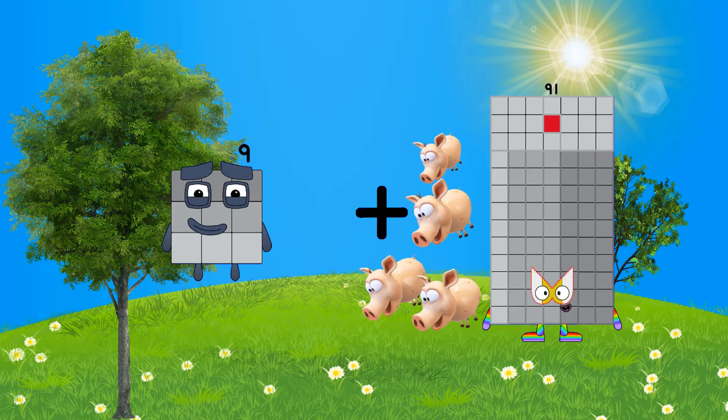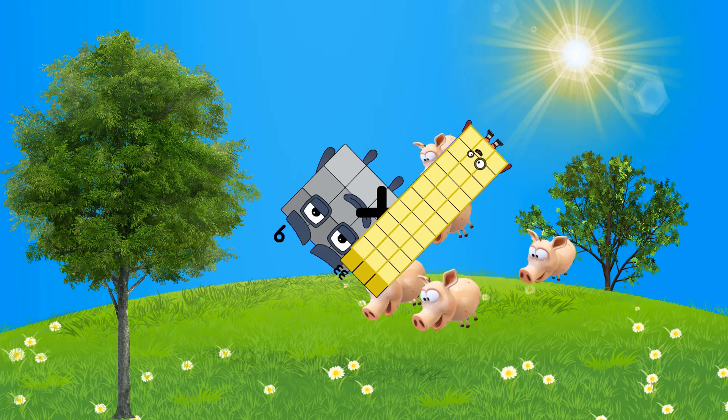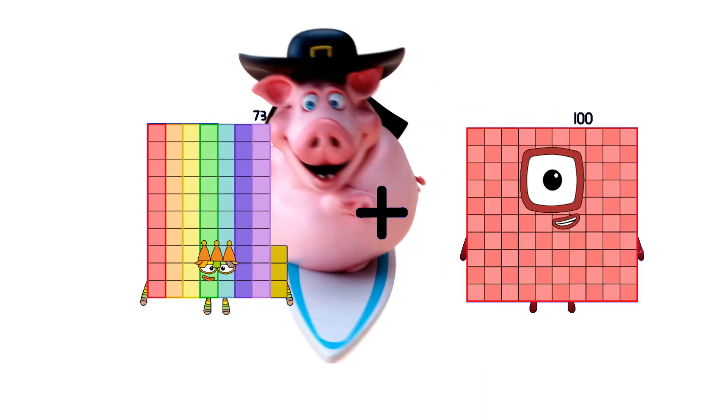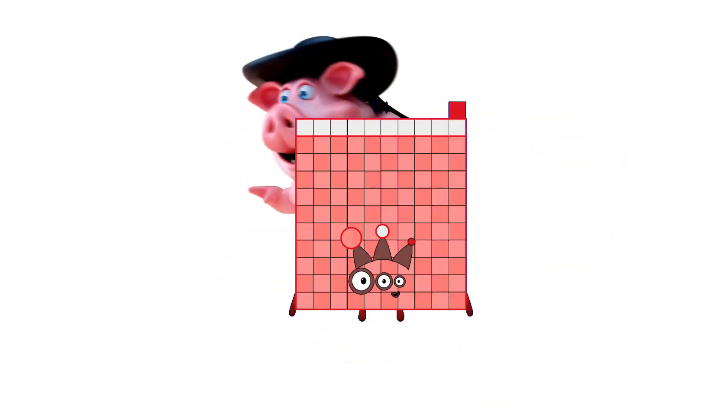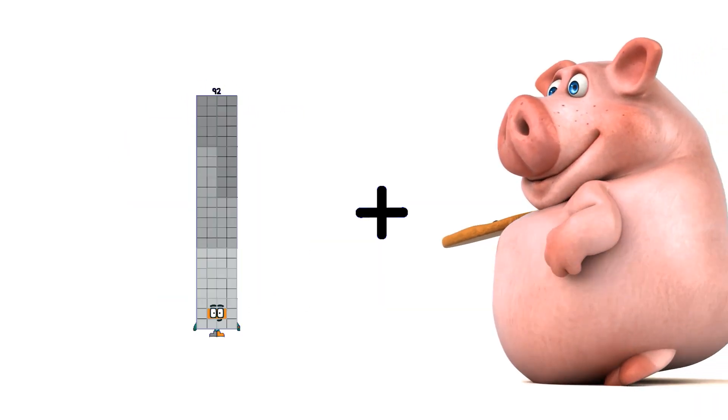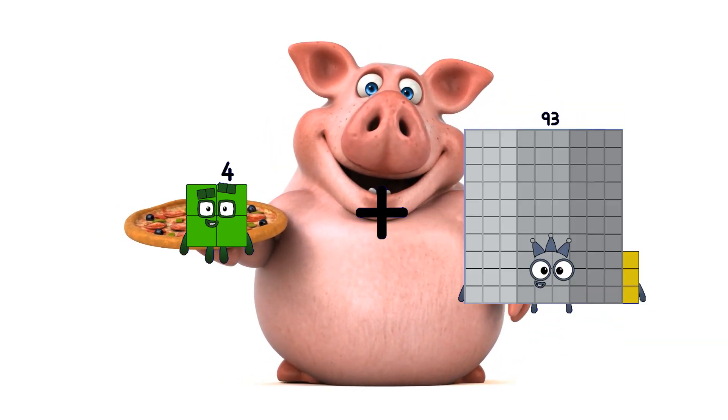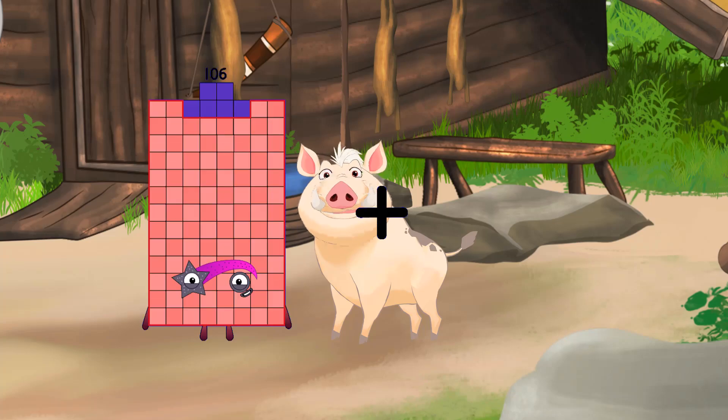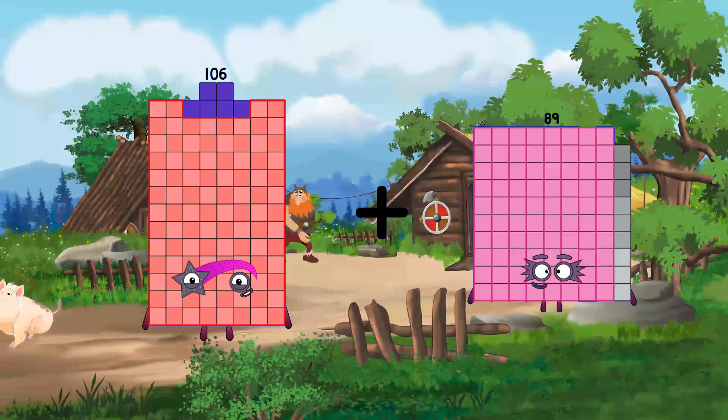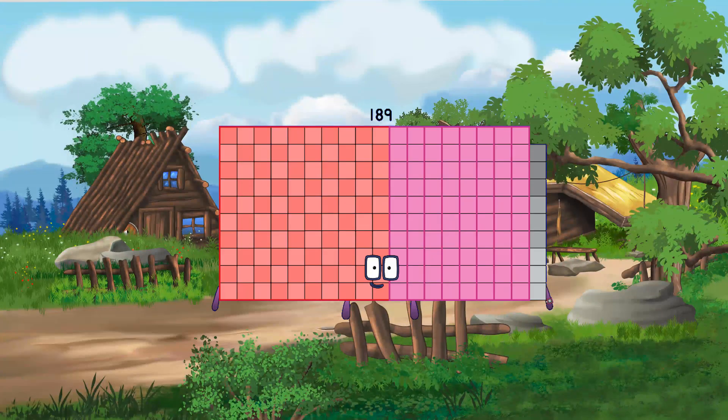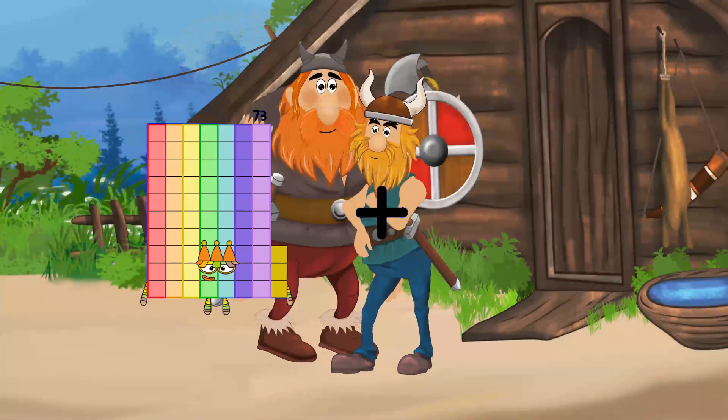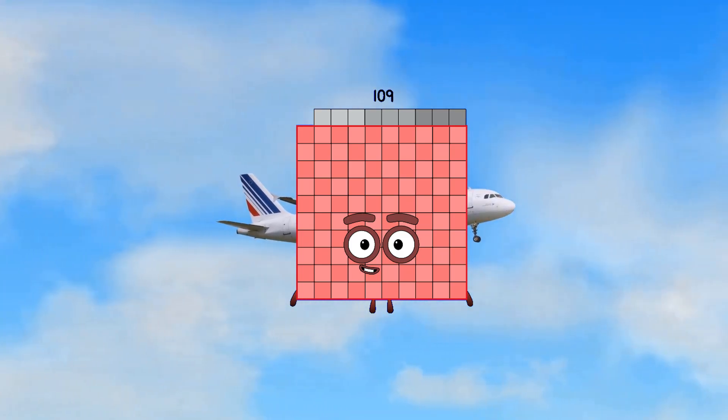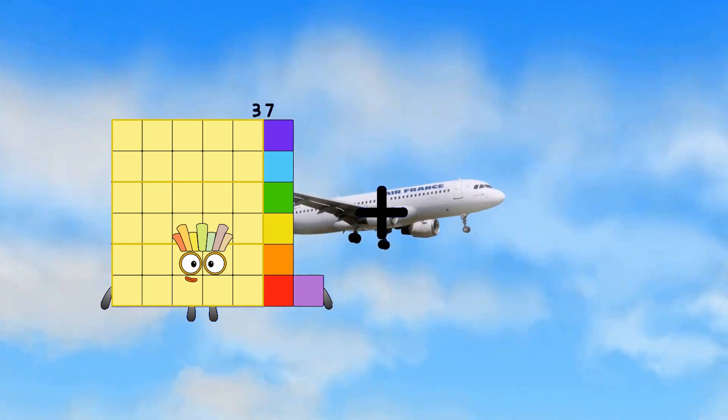9 plus 33 equals 42. 73 plus 38 equals 111. 73 plus 24 equals 97. 106 plus 83 equals 189. 73 plus 36 equals 109. 37 plus 83 equals 120.